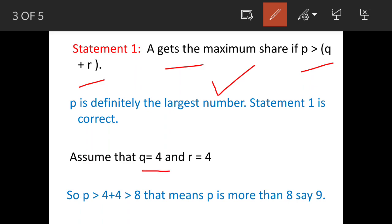Let us see that q is equal to 4 and r is also 4. So p will be 4 plus 4 is equal to 8, greater than 8. So say value of p is 9. So if you examine, this is more than what is given to B and C, and you can vary these values and check yourself, this number will always be greater than other two numbers. So hope this part is clear, this statement is correct.